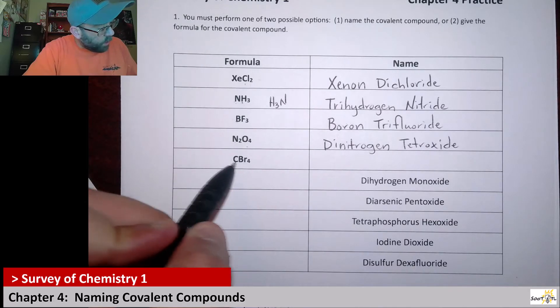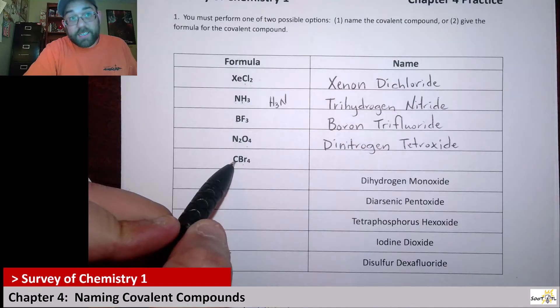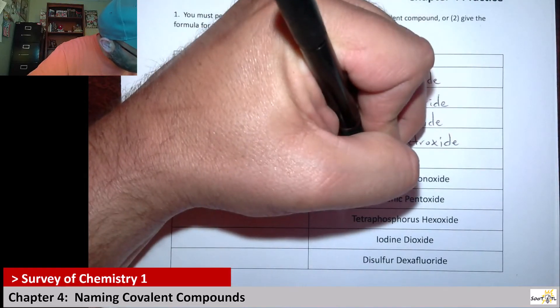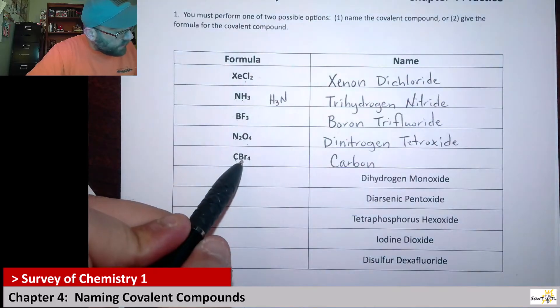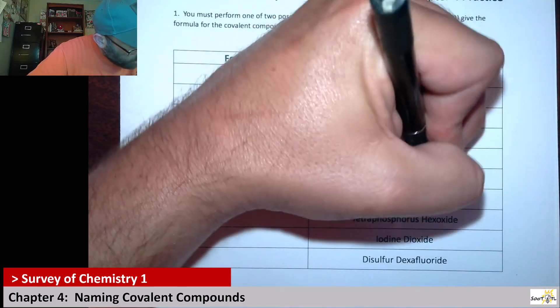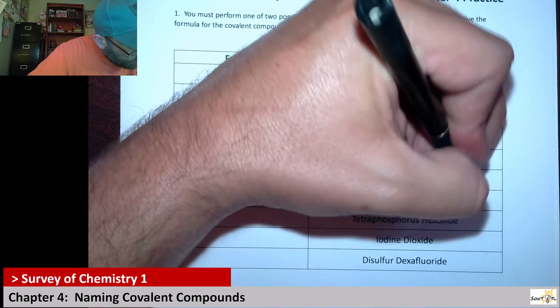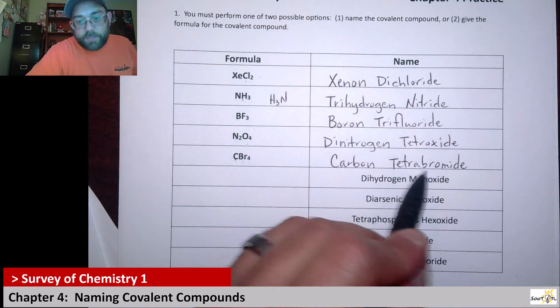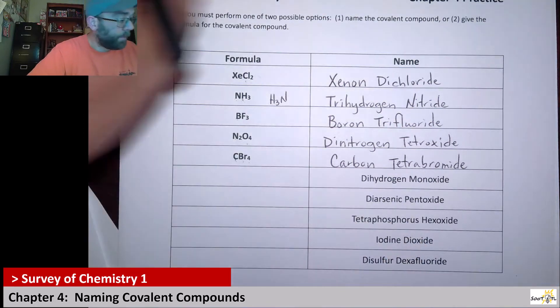Next we have one carbon, four bromines. Carbon is less electronegative, so you will write carbon. And in this case, there's four of them again, so that would be tetrabromide. Okay, so yet again, I put the A for this one, because the next letter was a B, so it's not two vowels right next to each other.